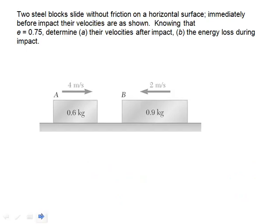So here's an example. I have two steel blocks. There's no friction on the horizontal surface. Immediately before the impact their velocities are given here. And we know the coefficient of restitution is 0.75. We're interested in the velocities after the impact. So I start off using momentum conservation.